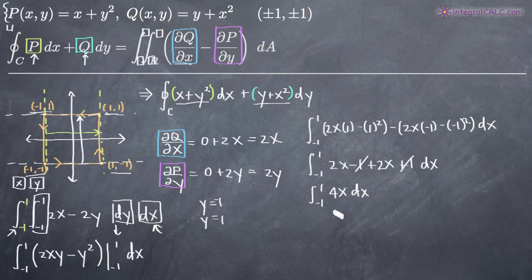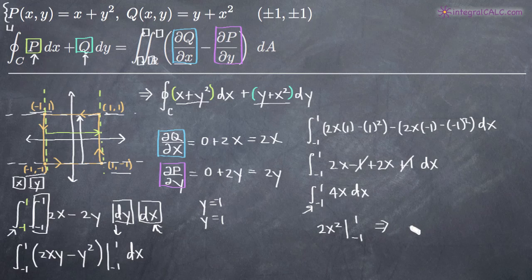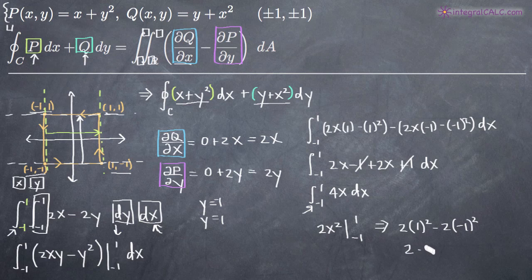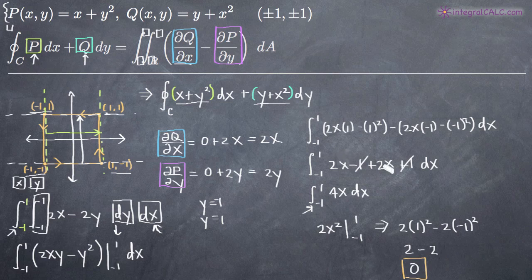Now we integrate 4x with respect to x, which gives us 2x squared. We evaluate from negative 1 to positive 1: 2 times 1 squared minus 2 times negative 1 squared equals 2 minus 2, which gives us 0. That is our final answer — the line integral over the square using Green's theorem equals 0.